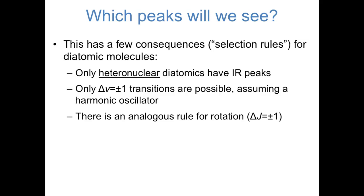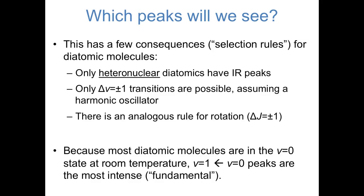For diatomic molecules, what we need to know is that first of all, only heteronuclear diatomics have infrared peaks. Second, only transitions in which the vibrational quantum number V either increases or decreases by 1 show up in a spectrum. And third, there's an analogous selection rule for rotation that says that we only see peaks when the rotational quantum number J either increases or decreases by 1. At room temperature, almost all diatomic molecules are in their vibrational ground state, V equals 0. That means we are really only going to see large peaks corresponding to V equals 0 being excited to V equals 1. These are called the fundamental peaks.